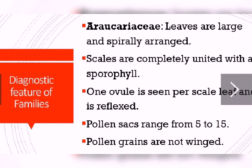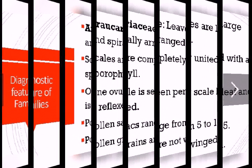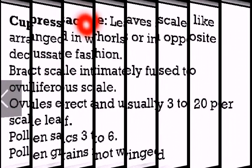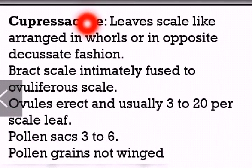Let us discuss the diagnostic features of families under Coniferales. Araucariaceae: leaves of plants belonging to this family are large and spirally arranged. Scales are completely united with sporophylls. A single ovule is seen per scale leaf and it is reflexed. Number of pollen sacs ranges from 5 to 15. Pollen grains are unwinged.